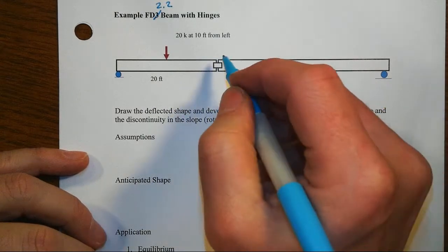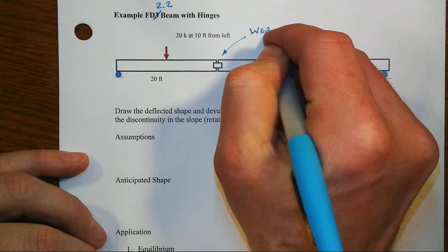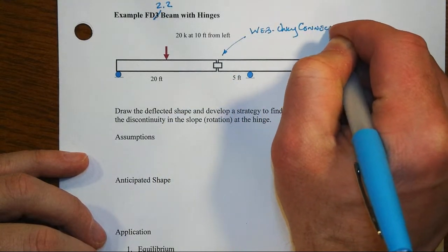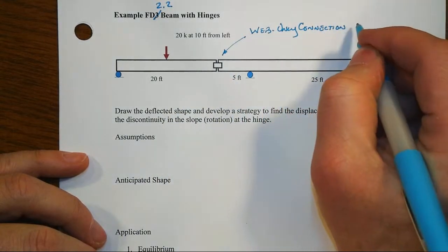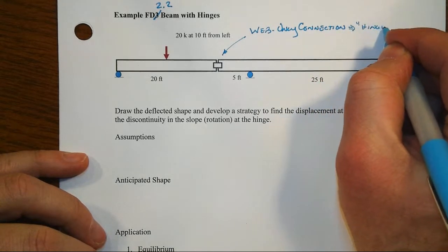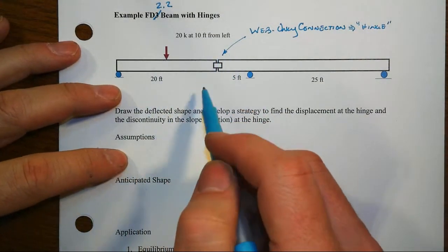We've got a two-span beam where at one specific location we have a web-only connection. That means we're only significantly transferring shear, and that means that we have, in effect, an internal hinge or pin in our system. So that's what we mean by beams with hinges here.